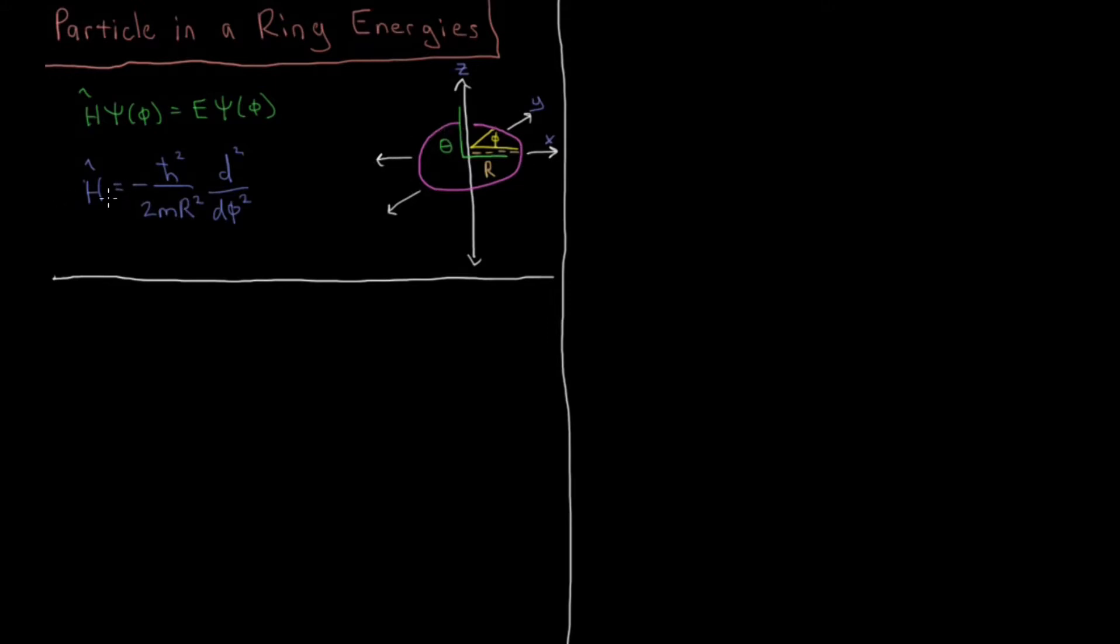And we have a Hamiltonian which is minus h bar squared over 2m r squared, our distance from the origin, times second derivative with respect to that angle. And we have no potential energy inside this ring so our potential term is zero. And our wave function is just a function of phi as well so we're seeking to solve this Schrödinger equation here with this Hamiltonian.